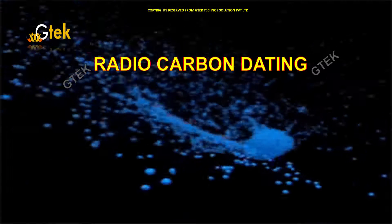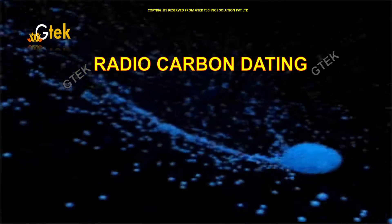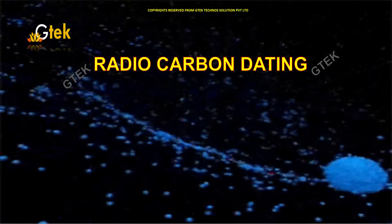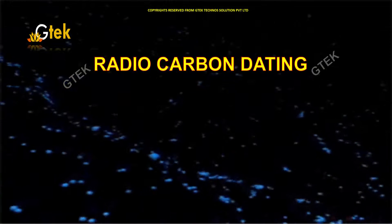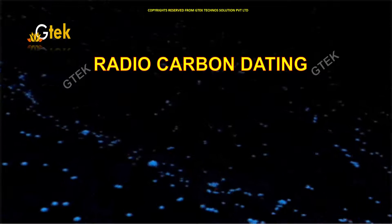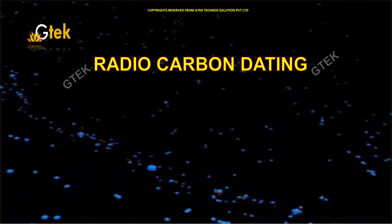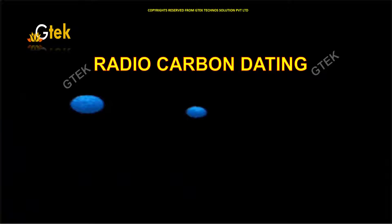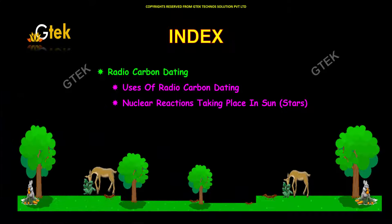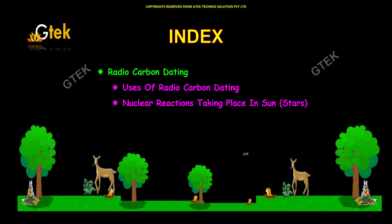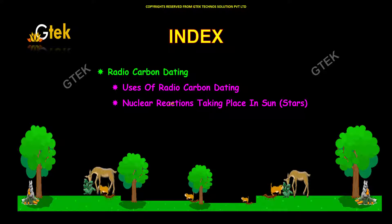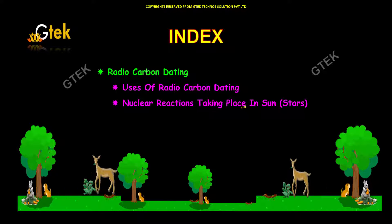Radiocarbon dating. As you know, this is one of the important areas in nuclear physics. This is used to identify the age of an object. Here is the index. I am going to talk about the uses of radiocarbon dating and nuclear reactions taking place in the sun and stars.